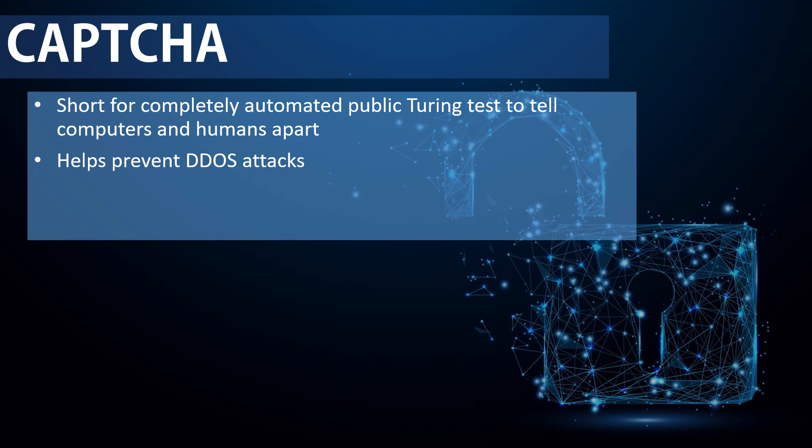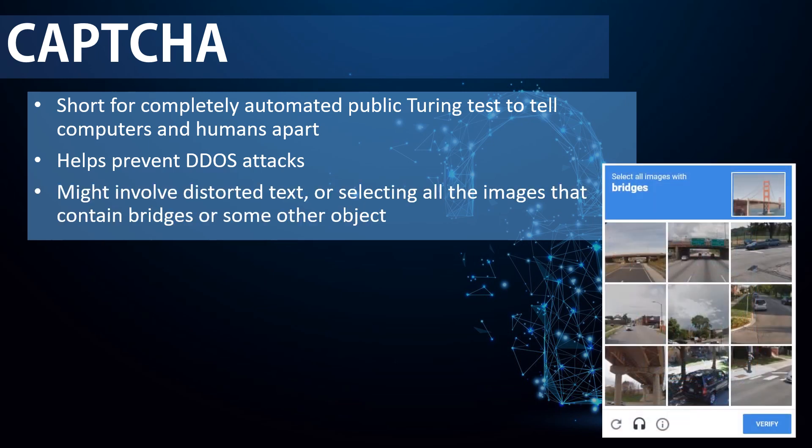If a website is being overwhelmed with requests, users trying to access it can be presented with one of these CAPTCHAs. That might involve distorted text that a computer has trouble identifying, or, like in the example here, selecting all the images that contain bridges or some other object. The thing these tasks have in common is that they're currently still very difficult for a computer to do on its own.